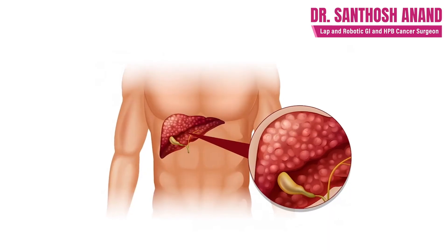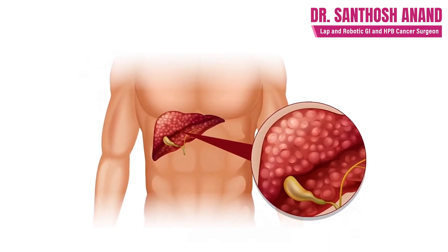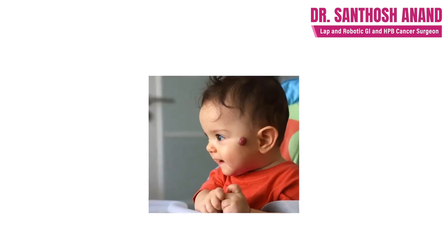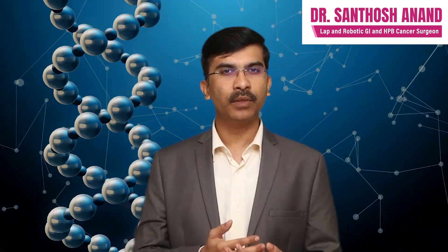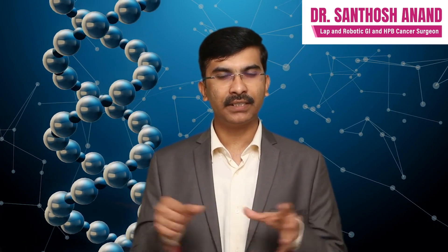Moving on to the tumor type or cancerous type of cystic disease of the pancreas — even in that category, some cysts can be benign tumors and some can be malignant tumors. Benign tumors will not progress over time to eat away adjacent organs, whereas malignant tumors will definitely spread to other organs.